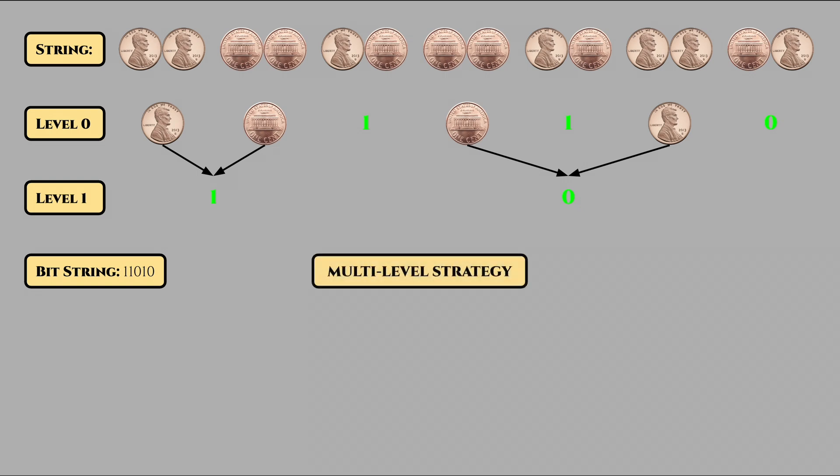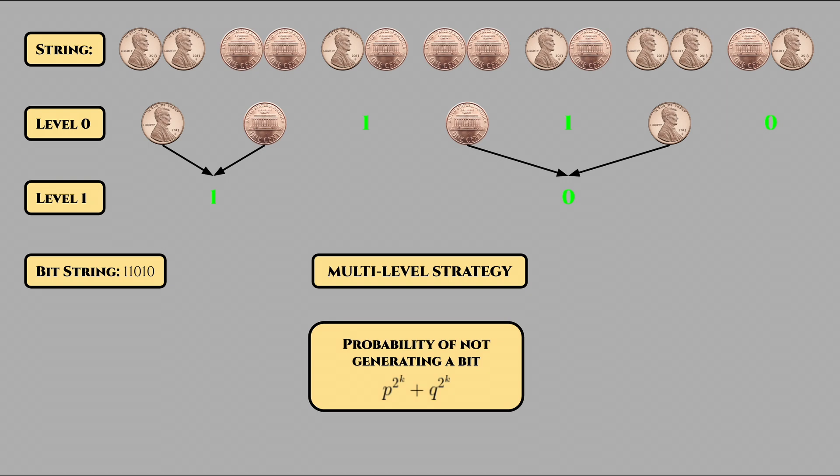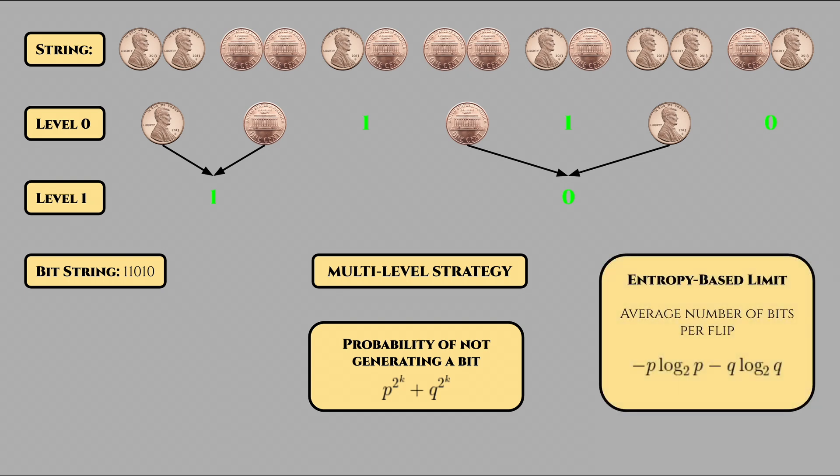This approach is called the multi-level strategy. It is already far more efficient, since the probability of failing to generate a bit decreases exponentially with the number of flips. More mathematically, after the first 2 to the power of k flips, the probability of not generating a bit is p to the power of 2 to the power of k plus q to the power of 2 to the power of k. The first value represents only getting heads for the 2 to the power of k flips, while the second one represents getting only tails. Then, the average number of flips per bit approaches what's called the entropy-based limit, or negative p times log base 2 of p minus q times log base 2 of q.